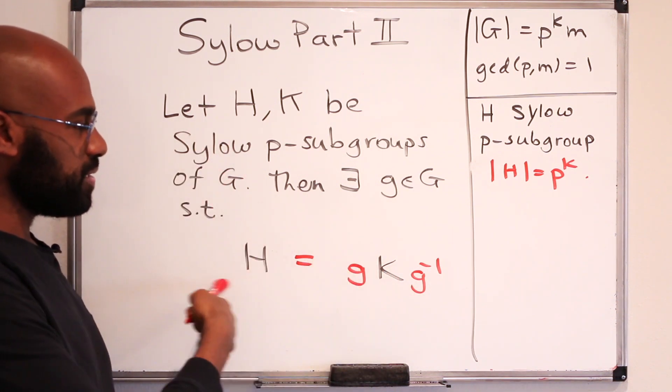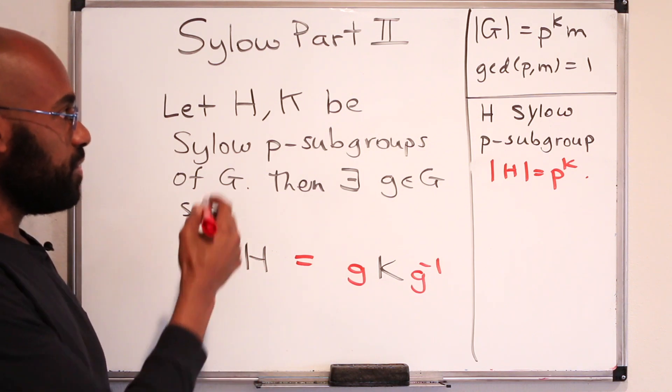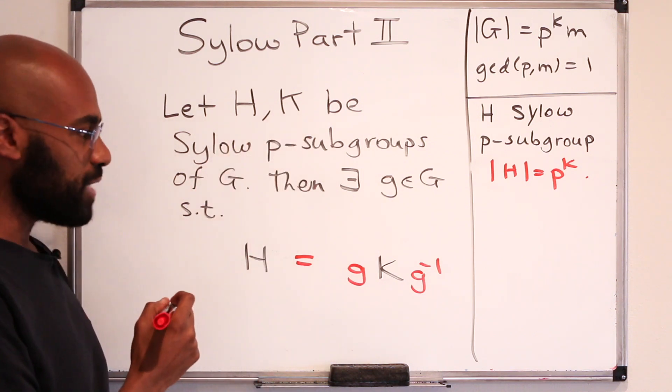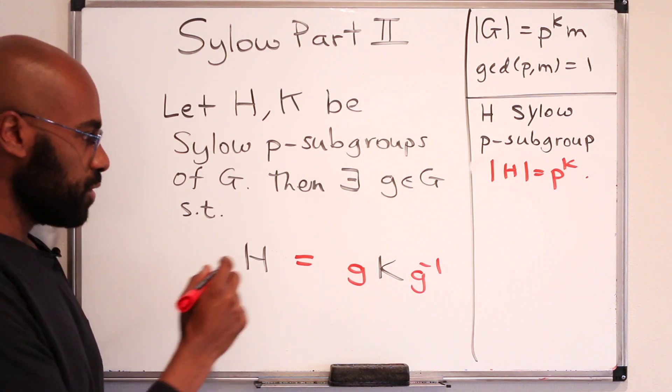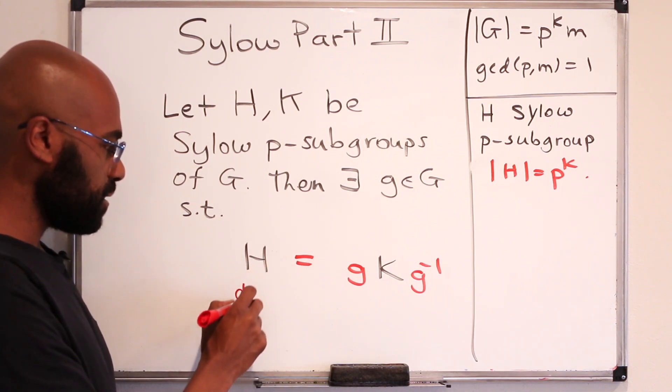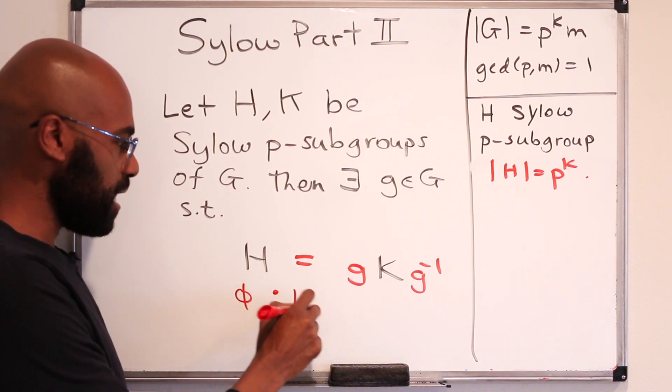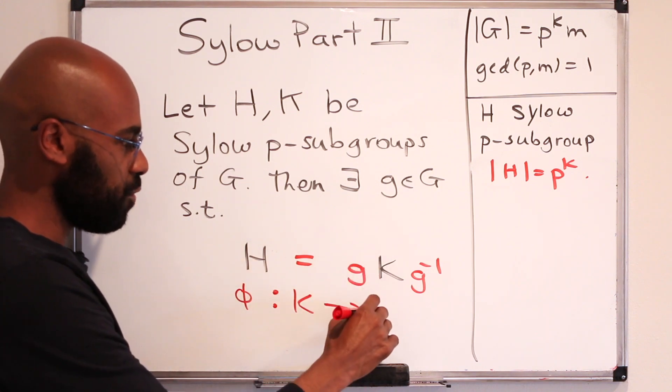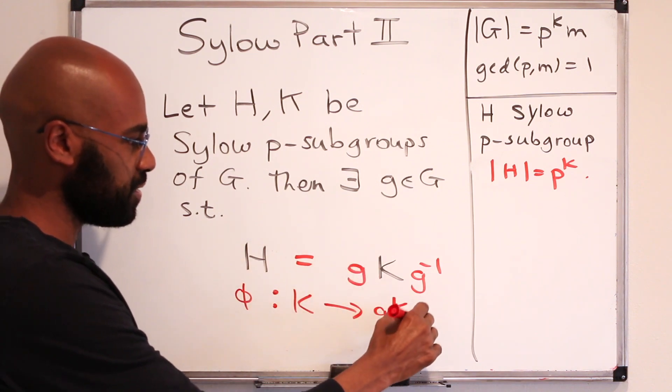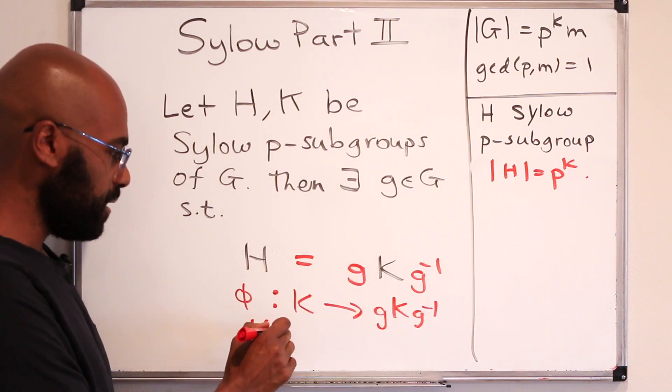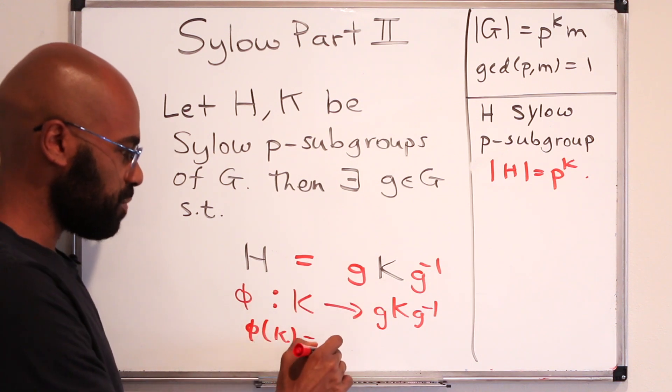Now one of the consequences of this statement is that these two Sylow P subgroups actually have to be isomorphic. So the idea is we can construct a map from K to H, knowing that H looks like this. And the map sends any element little k to its corresponding element here, which is G, K, G inverse.